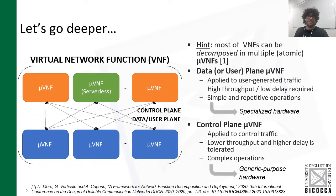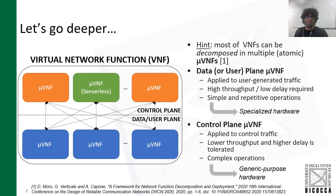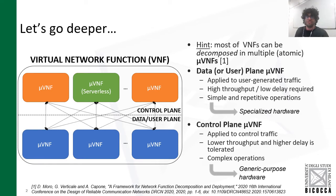As we can see in this slide, a virtual network function can typically be decomposed into multiple atomic micro-VNFs, which are either data-plane micro-VNFs or control-plane micro-VNFs. A data-plane micro-VNF is typically applied to user-generated traffic. It requires high throughput and low delay, and performs simple and repetitive operations, typically on the packet header. These kinds of functions typically require specialized hardware.